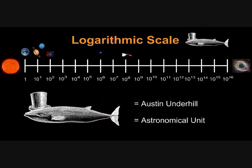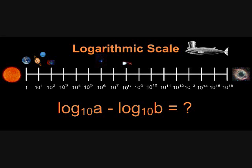Also, there is an actual astronomical term for the average distance between the earth and the Sun, and that happens to be an astronomical unit. If you're confident about what's going on now, try to use the logarithmic scale to justify what happens when you take two logarithms and subtract them.